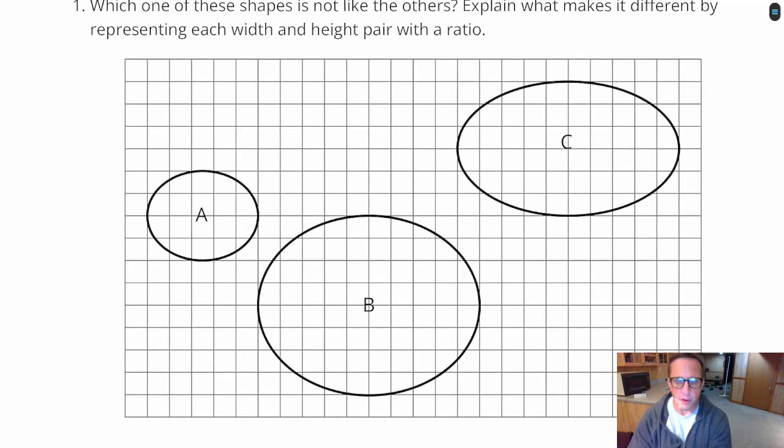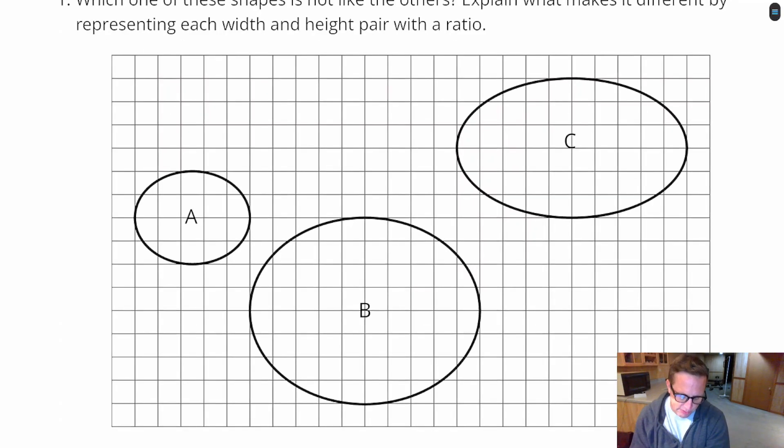which one of these shapes is not like the others? Explain what makes it different by representing each width and height pair with a ratio. Okay, so these are all ovals. They're not circles, because circles are exactly as wide as they are tall, they have equidistant from the middle, but they're ovals. And the thing that I kind of see here is they look like they have a width and they have a height. They have differing widths and heights, if you think of it that way, because it looks a little stretched out. Like it's a circle that was sat on.